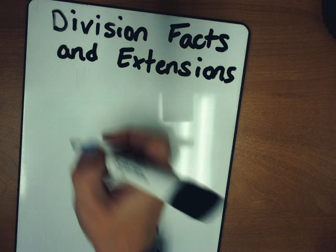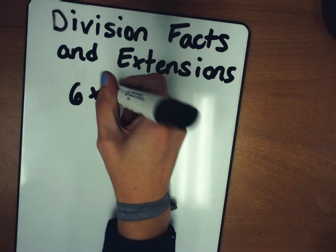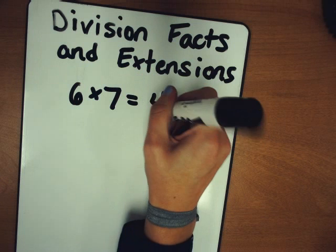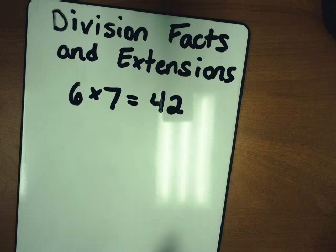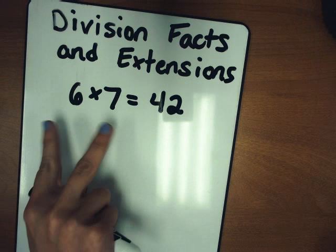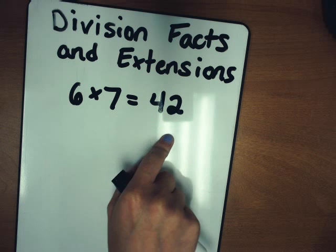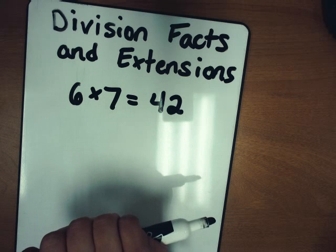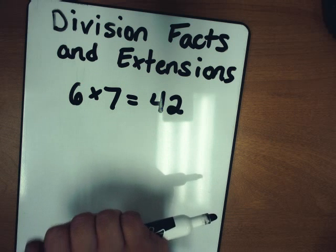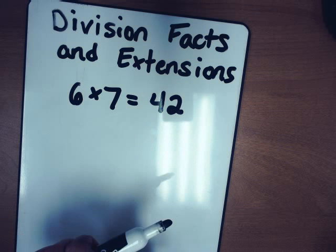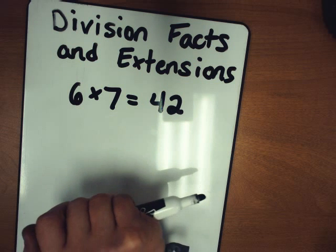So when we talk about 6 times 7 equals 42, we've got our two factors and our product. I want you to think about the division fact that can be posed using those same numbers in this multiplication division fact family.